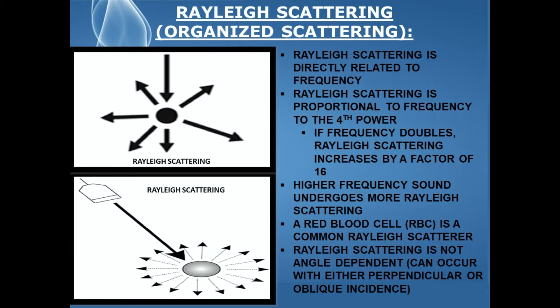If frequency doubles, Rayleigh scattering increases by a factor of 16. Higher frequency sound undergoes more Rayleigh scattering. A red blood cell is a common Rayleigh scatterer. Rayleigh scattering is not angle dependent — it can occur with either perpendicular or oblique incidence.